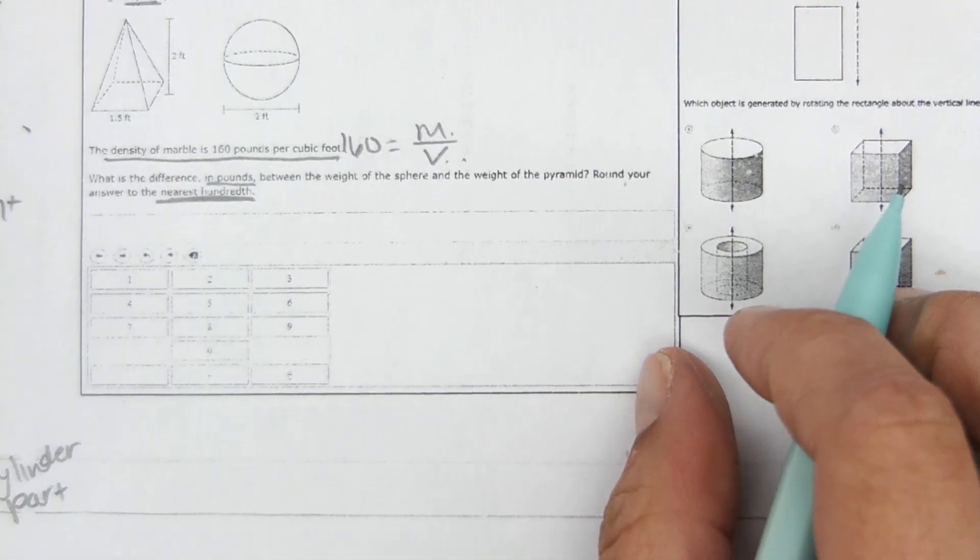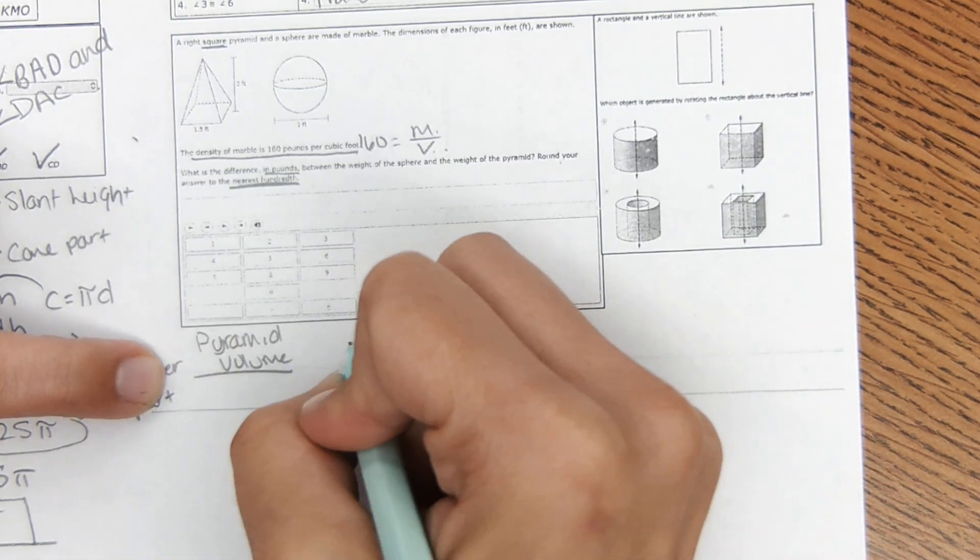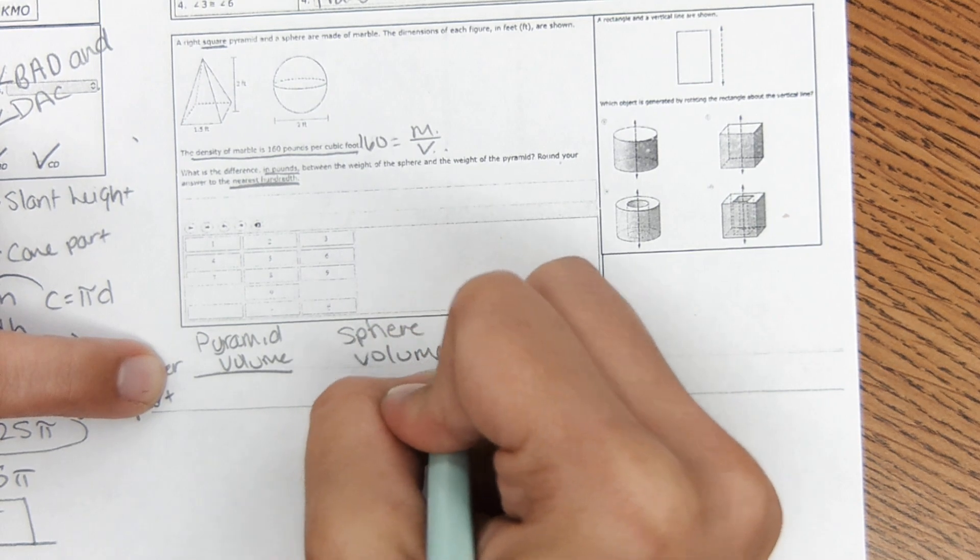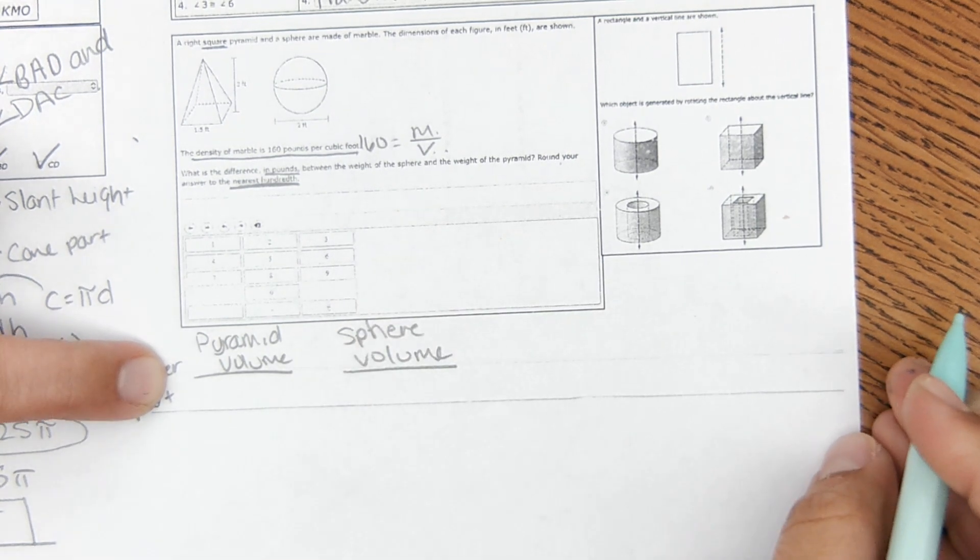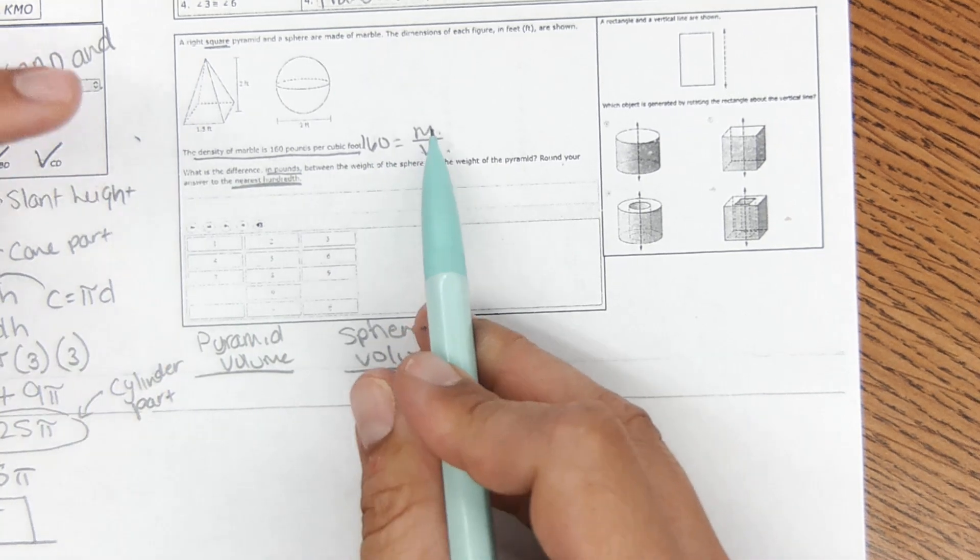So down here in this area, I'm going to zoom out so I can see the other thing. Down here in this area, I'm going to find the volume of the pyramid, pyramid volume, and then sphere volume. And then I can plug those volumes into this equation to find the mass of each.